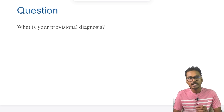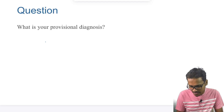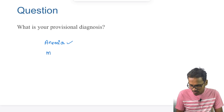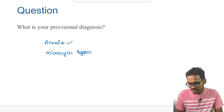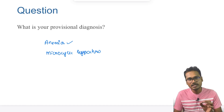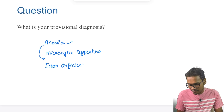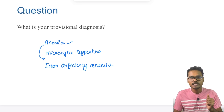Let's start with the first question — the provisional diagnosis. There are classical features indicative of anemia: the hemoglobin levels are low, the patient has pallor and koilonychia, and the peripheral blood smear shows microcytic hypochromia. This is very classical and one of the most common types of anemia in India — Iron Deficiency Anemia. The provisional diagnosis here is Iron Deficiency Anemia.